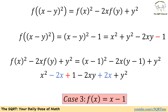Case 3: f of x equals x minus 1. For the left-hand side we get x squared plus y squared minus 2xy minus 1. But the right-hand side gives plus 1 instead of minus 1, so this case is not acceptable. Therefore, f of x can be x or x plus 1, and that concludes our answers.